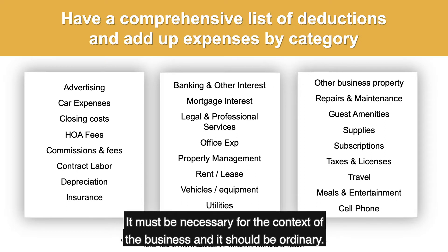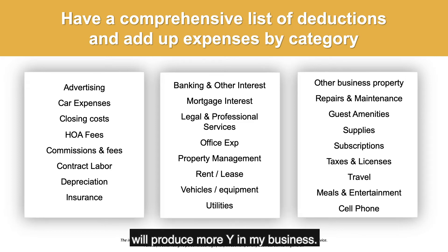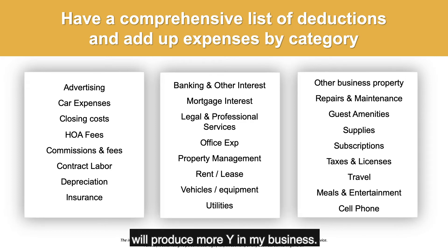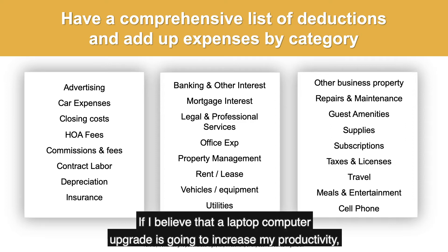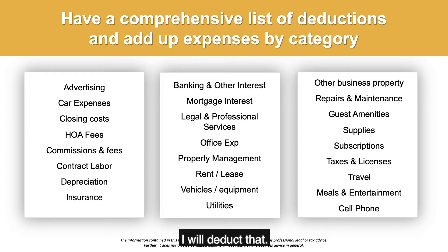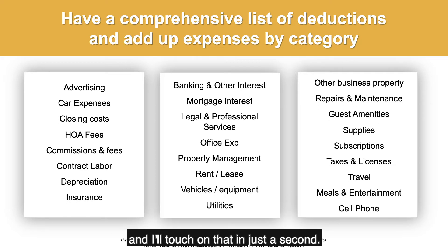The rules say two things for what's considered an ordinary business deduction: it must be necessary for the context of the business, and it should be ordinary. The way I interpret that is: spending a dollar on X will produce more Y in my business. So if I can correlate that a meal with an investor will improve my business, I'll write off that meal. If a laptop upgrade is going to increase my productivity, I will deduct that. At some point, you get into personal use versus business use.